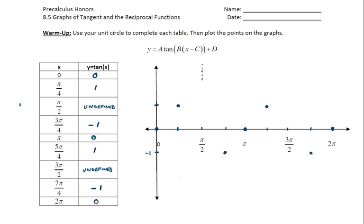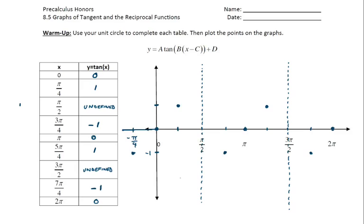In this case, I could put more values in the table — like pi over three and values closer and closer to pi over two — to see what tangent approaches. But to save time, this type of undefined for our graph is actually going to be a vertical asymptote. There's going to be a vertical asymptote at pi over two and three pi over two.